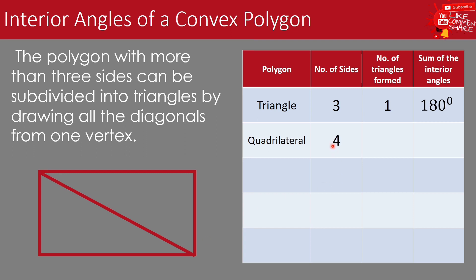The number of triangles formed in a quadrilateral is two — we have triangle one and triangle two — when we draw one diagonal from one vertex. Since we have two triangles in a quadrilateral, the sum of the interior angles is two times 180 degrees, because the sum of interior angles of a triangle is 180 degrees. So two times 180 equals 360 degrees. Therefore, the sum of the interior angles of a quadrilateral is 360 degrees.